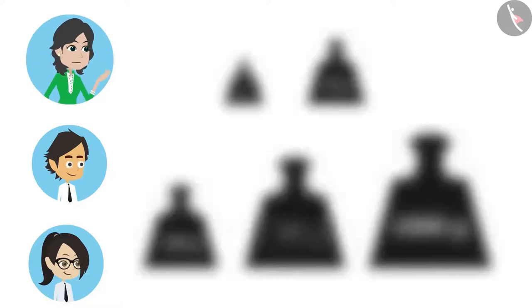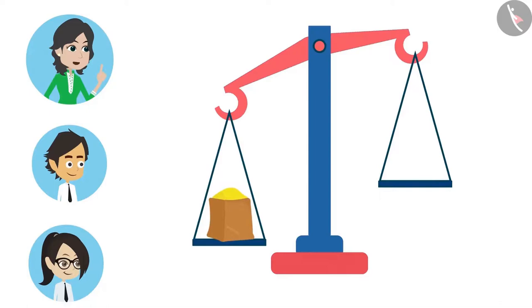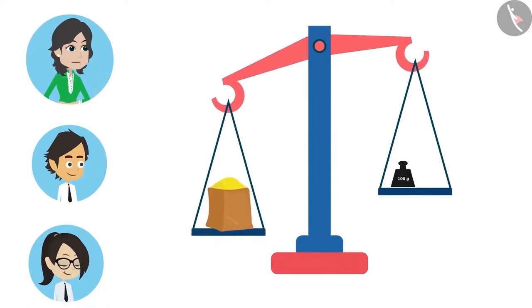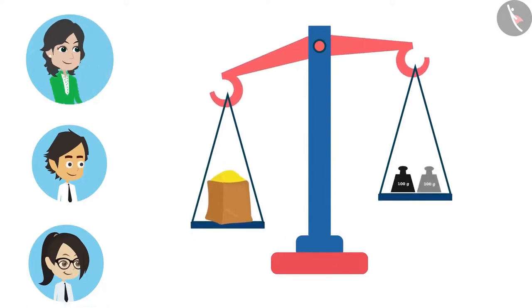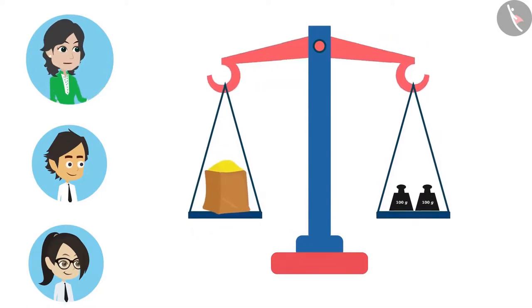Look, the thing you want to measure is kept on one side of the scale and one or more weights depending upon the requirement on the other side. When both sides are in balance, this means that the weight on both sides are equal.